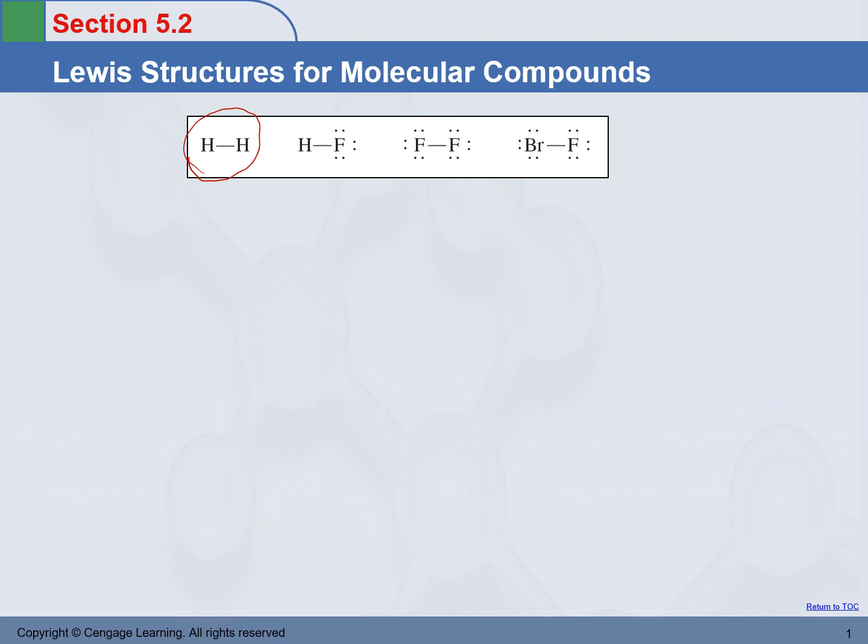If we use the similar principle and talk about the process of covalent bond formation between a hydrogen atom and a fluorine atom, between two fluorine atoms, we will come up with a Lewis structure of hydrogen fluoride and the fluorine molecules like that.